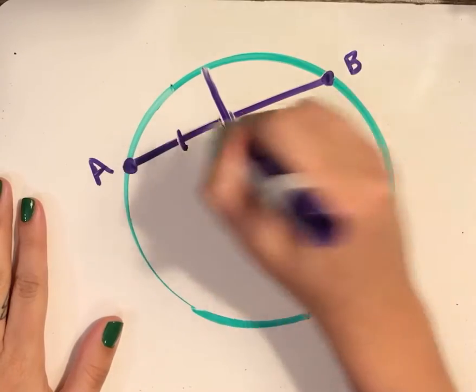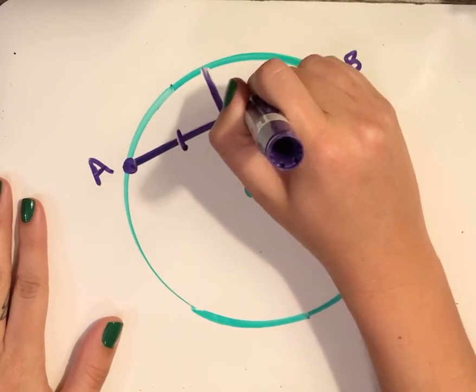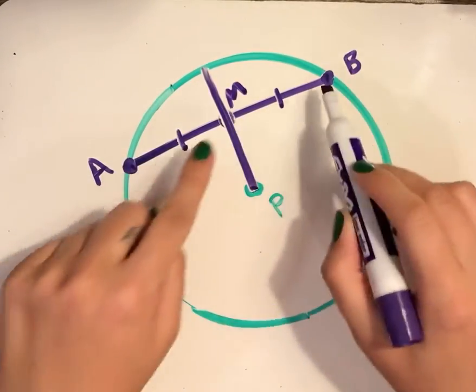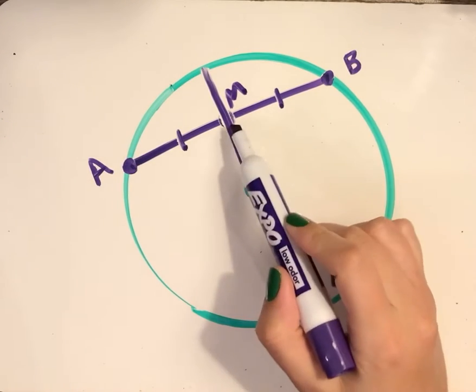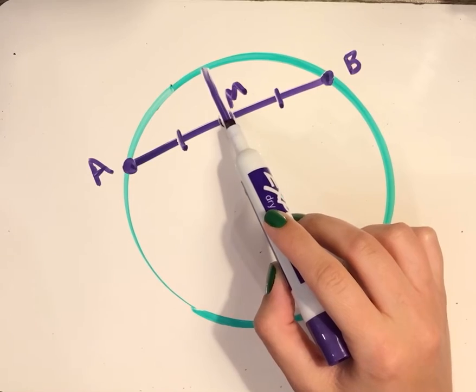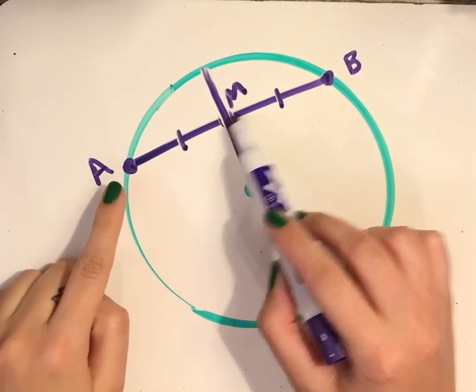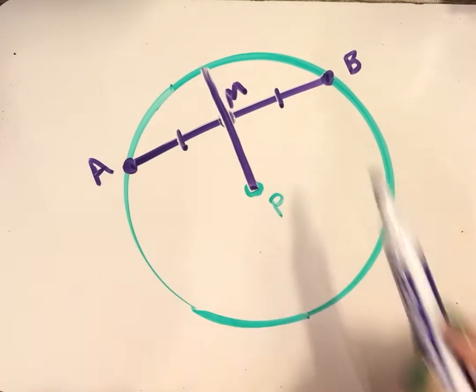we'll call this midpoint M. I know that AM is congruent to MB, because M is the midpoint, so that means it has split the segment AB into two equal parts.